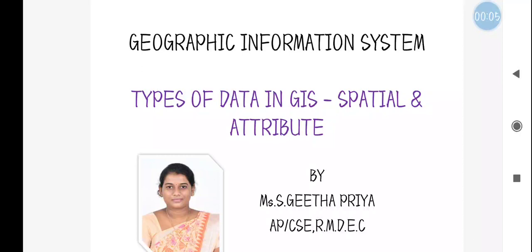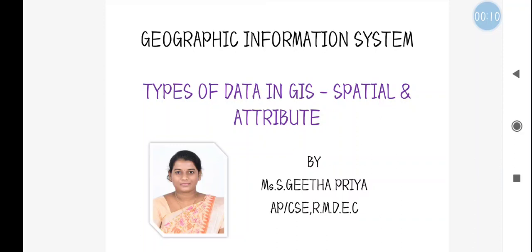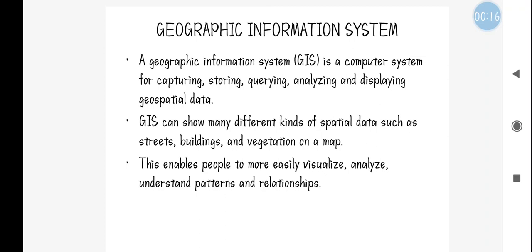Hello everyone, this is Geetha Priya from RMD Engineering College. In this lecture we will be seeing about types of data in GIS — that is spatial data and attribute data. GIS, or Geographical Information System, is about working on geographical or geospatial data — whatever space or data is available in the real world. The system used for capturing, storing, analyzing, and making applications from geographical data is called a Geographical Information System.